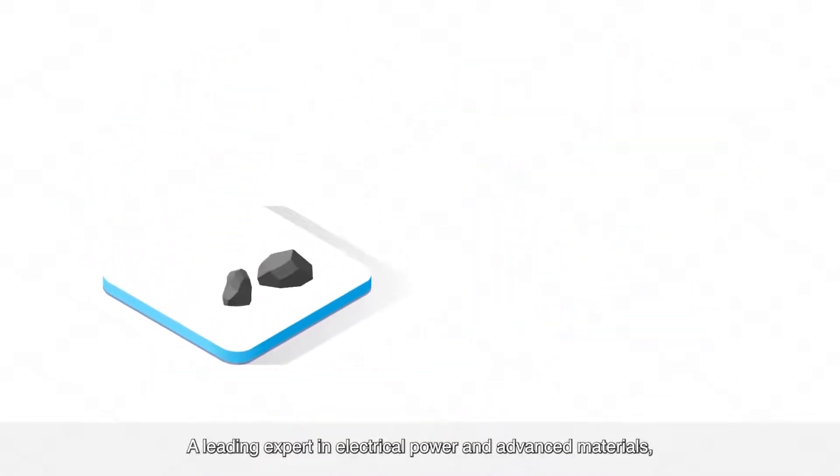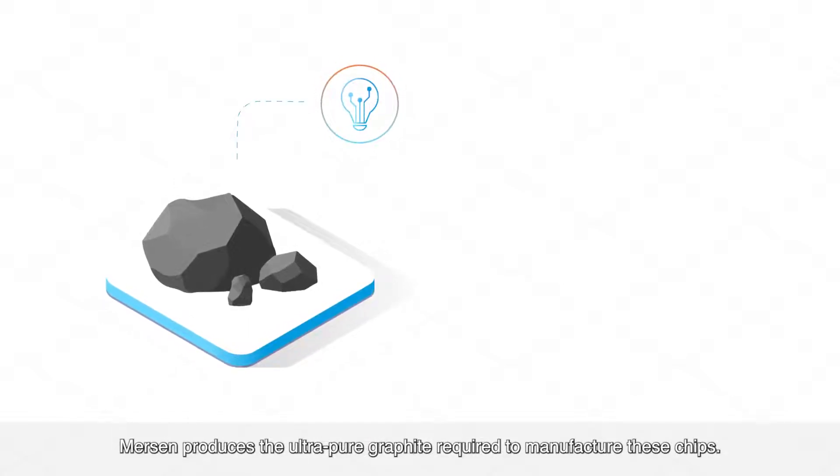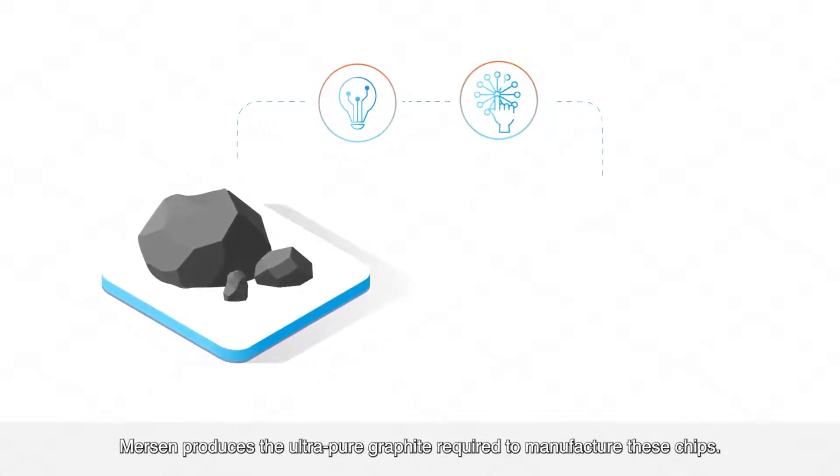A leading expert in electrical power and advanced materials, Mersin produces the ultra-pure graphite required to manufacture these chips.